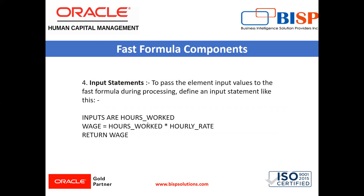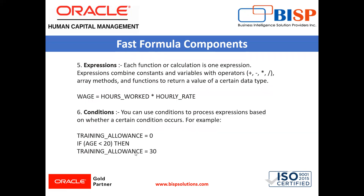Next is the input statement. To pass element input values to the Fast Formula during processing, define an input statement like this: inputs are hours worked and wages equals hours worked multiplied by hourly rate, and return wages. So hours worked is an input. You can use hours worked as an input value for the wage element, where wage is an element.